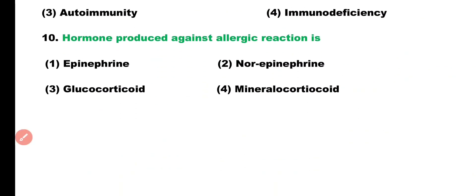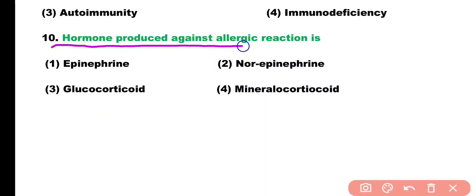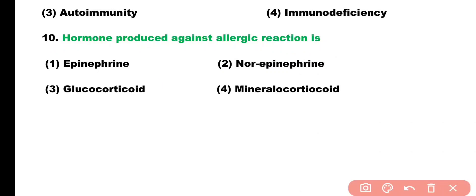Question number ten: which hormone is produced against an allergic reaction? Options: epinephrine, norepinephrine, glucocorticoid, mineralocorticoid. Correct answer is option three — glucocorticoid is the hormone that is produced against allergic reaction.